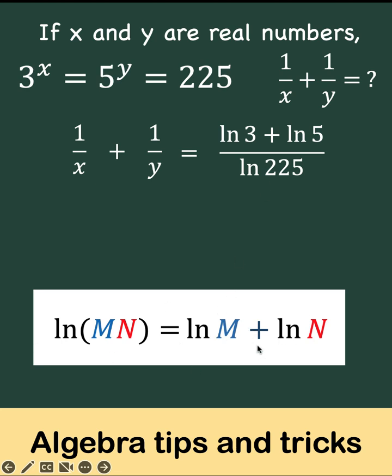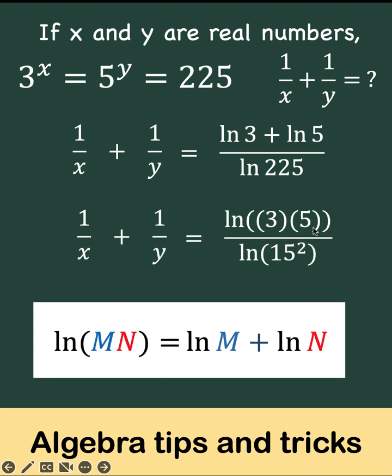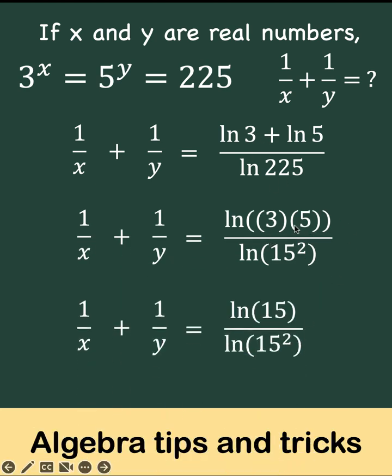So by the converse of this property, we can write this as product ln of 3 times 5. And of course, we can simplify this as ln of 15.